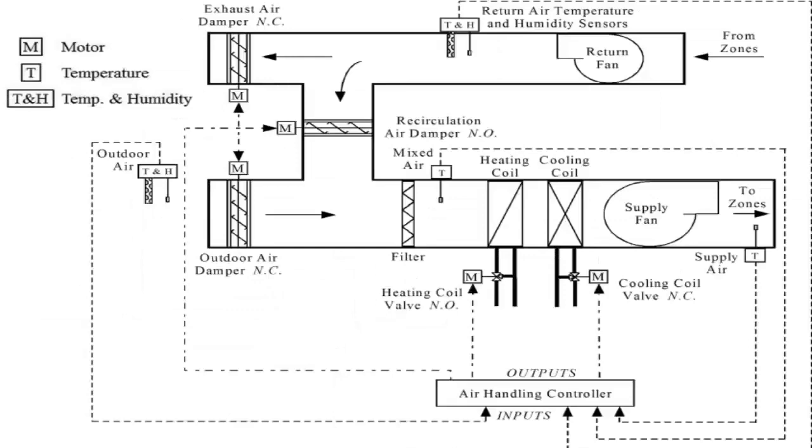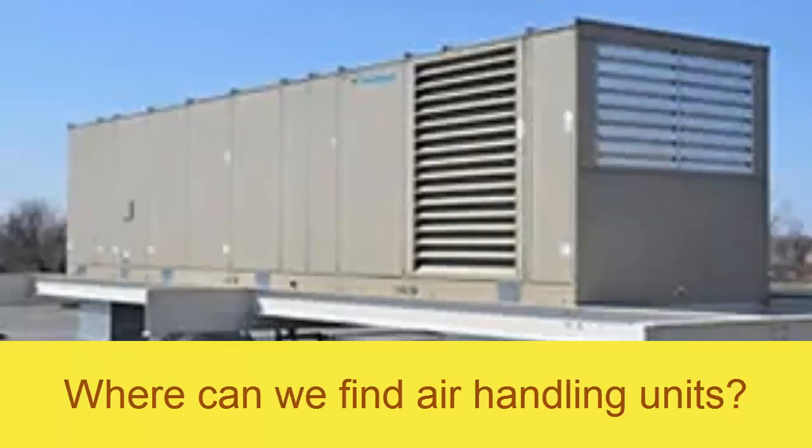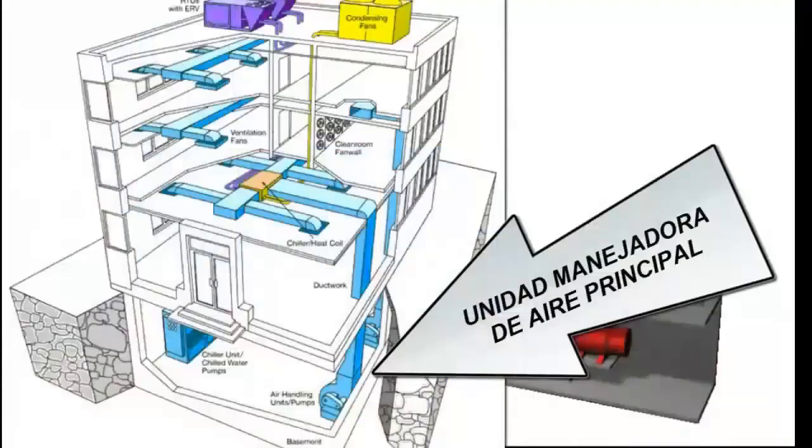Where do we find air handling units? Air handling units are found in buildings with medium and large spaces. Generally, they are located in the basement, on the ceiling, or on the floors of the building.